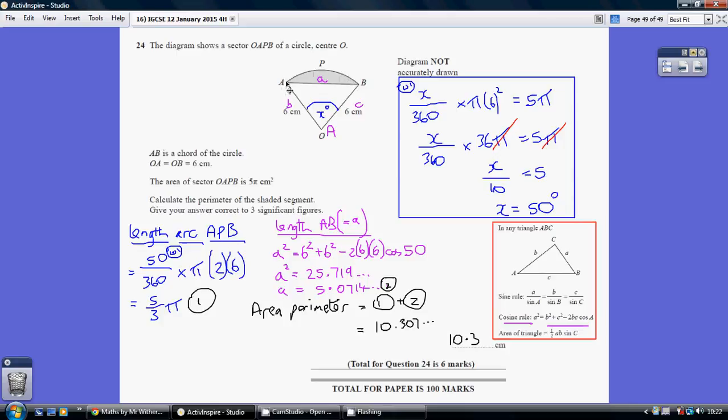Now, in order to do this, and to work out either of those, we're going to need to know this angle here, and the fact that allows us to do this, we're told that the area of the sector AOPB is 5π, so the area of this whole thing is 5π.